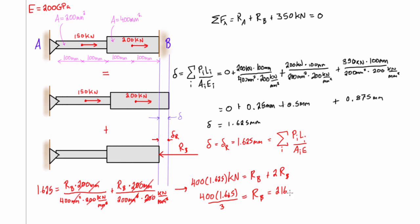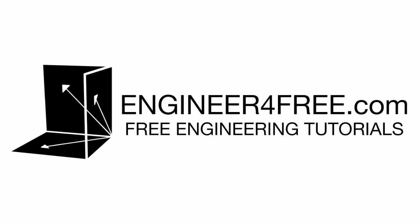RB equals 216.67 kilonewtons, going in the direction assumed since it's positive. Plugging back in, RA equals 350 minus 216.67, giving RA equals 133.33 kilonewtons going to the left. So we used the method of superposition to solve this statically indeterminate problem.